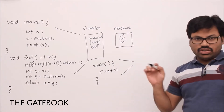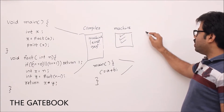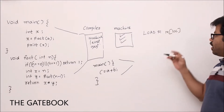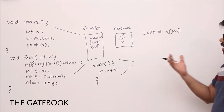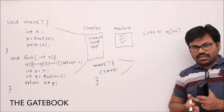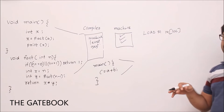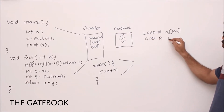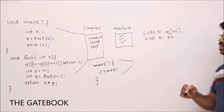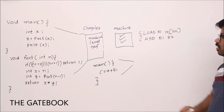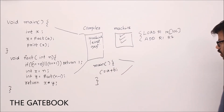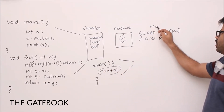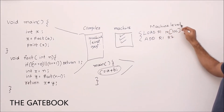Your machine can do a few things — for example, it can load a memory location value into some register. We're trying to understand this in an easier way, not going into details because this is not a computer organization class. A rough understanding is sufficient. The second instruction is something like: add r1, r2 — meaning your computer can add two registers.